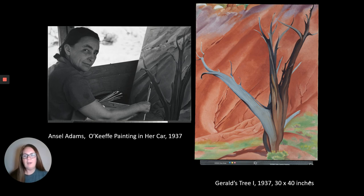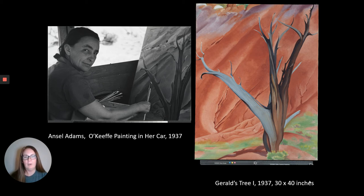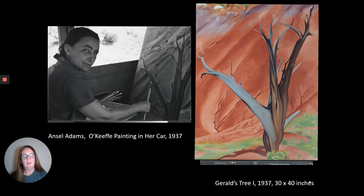Georgia O'Keeffe actually converted her car into an outdoor studio. We see a photograph of her taken by Ansel Adams — a well-known photographer — painting in her car. She took the passenger seat, unbolted it, and repositioned it facing backwards, then used the back seat to prop up her canvas so she could paint outdoors in New Mexico without being bothered by the sun. On the right is the painting she created in her car, called Gerald's Tree, a landscape at Ghost Ranch.